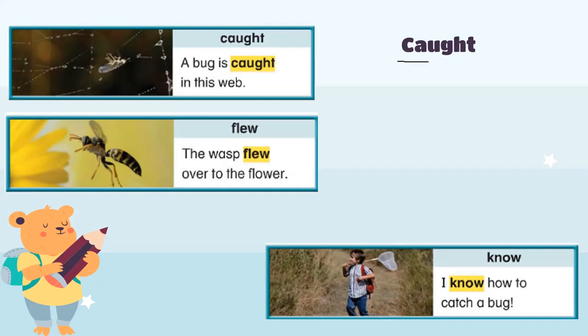Let's say it together: 'caught.' The word 'caught' is the past tense of the verb 'catch.' Let's read the example: 'A bug is caught in the web.' Because this happened a long time ago — it happened in the past — we say 'caught' instead of 'catch.' A bug is caught in this web.